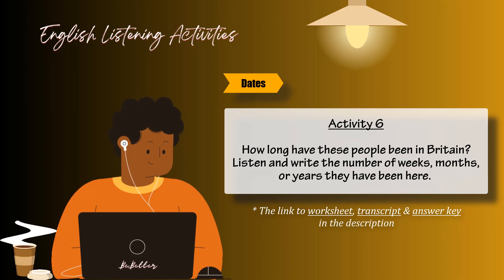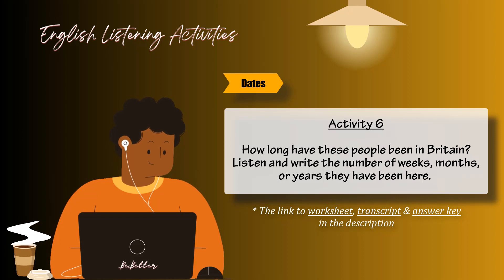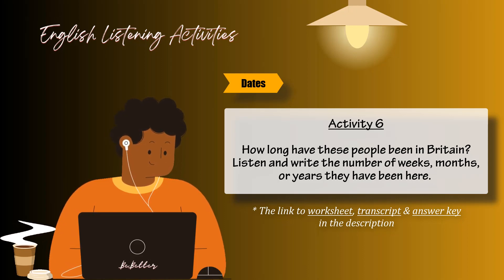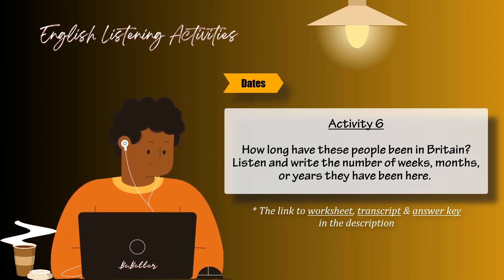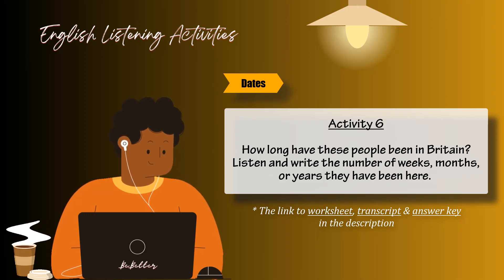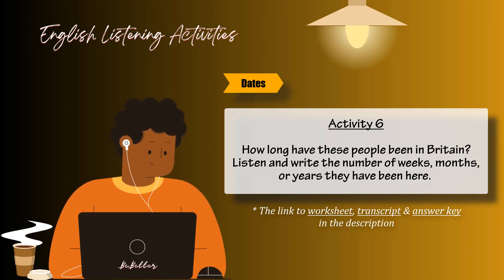Activity six. How long have these people been in Britain? Listen and write the number of weeks, months, or years they have been here. One. How long have you been here? I've been here for about six and a half weeks now. Two. Have you been living in Britain long? Yes, I came here sixteen years ago. Three. Have you lived here long? For about three and a half months now. Four. And you've been here for about three months? No, I've been here for nine months now.